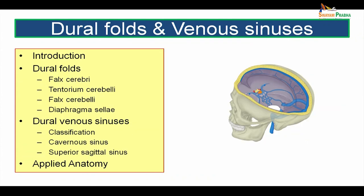We will be dealing with the dural folds and the venous sinuses under these headings: introduction, dural folds — studying all four of them, that is the falx cerebri, tentorium cerebelli, falx cerebelli, and diaphragma sellae. Then we will go on to the dural venous sinuses, their classification, details of the cavernous sinus, the superior sagittal sinus, and all the other sinuses, and finally the applied anatomy.